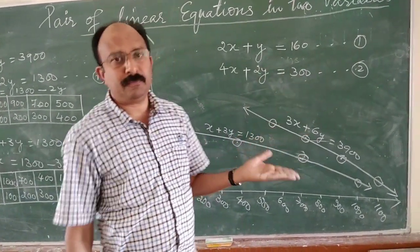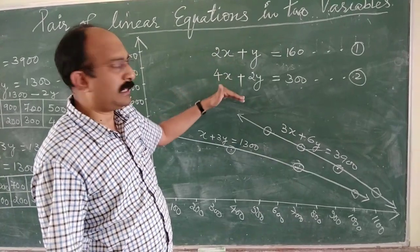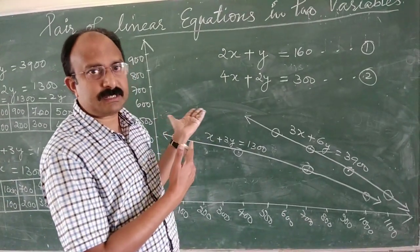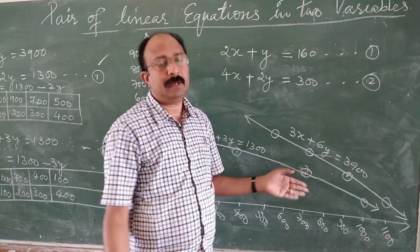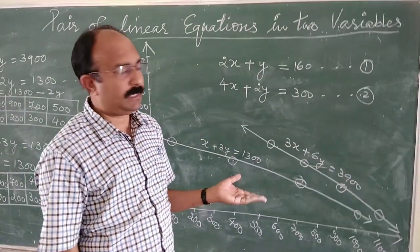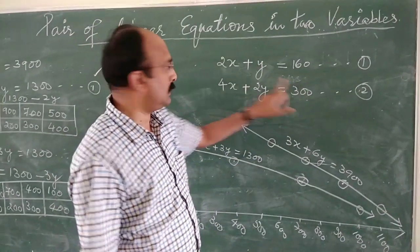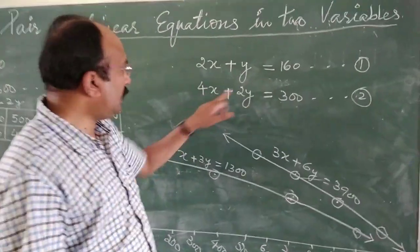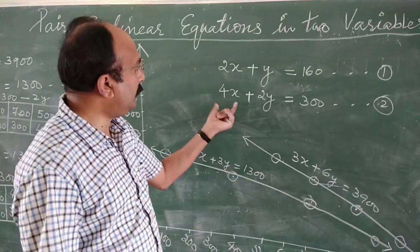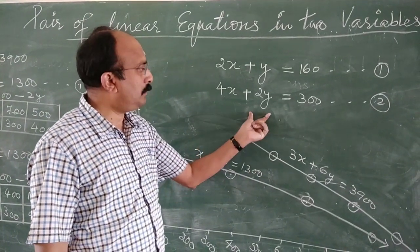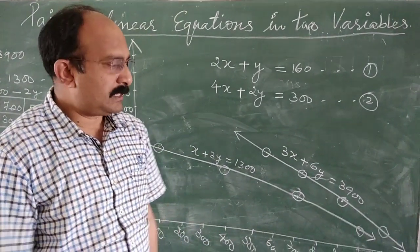The algebraic representation is complete. Now as homework, make tables for both equations and plot both graphs on the same graph paper. Note that in the second equation, 2 is common on both sides, so it simplifies to 2x plus y equals 150. See what shape of graph you obtain — that is the graphical representation. Please do this as homework.